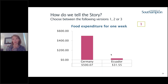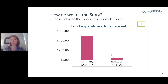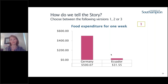Let's take an example of how we tell the same story in three different scenarios. I'd kindly invite you to choose between three versions of the same story and tell us which is most convincing. We pick the story of food expenditure for one week. We travel a bit and compare Germany with Ecuador — in Germany the average food expenditure for one week is around $500, and in Ecuador $32. How do we visualize this story?